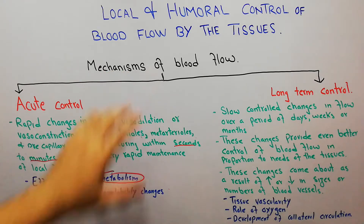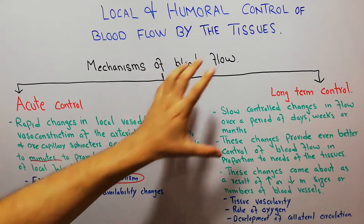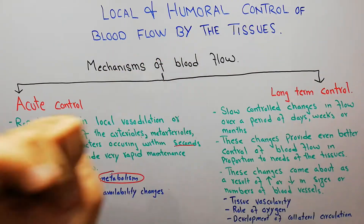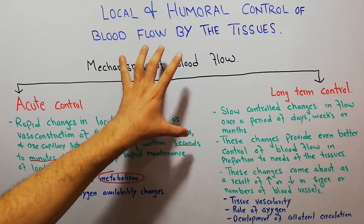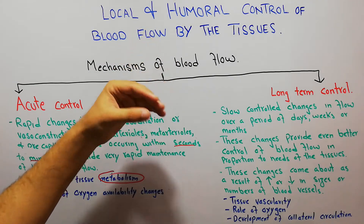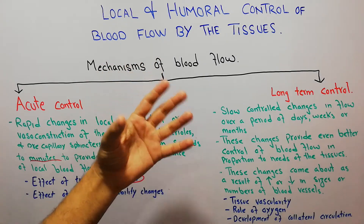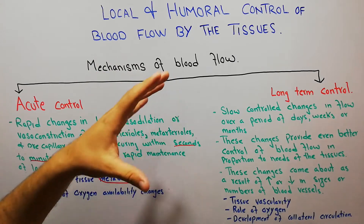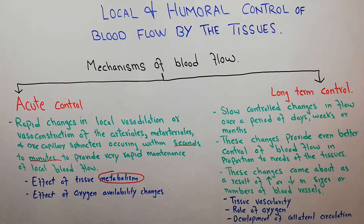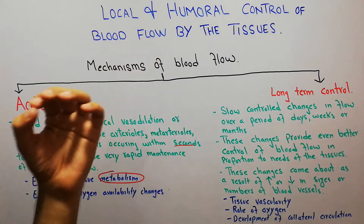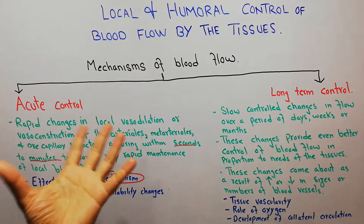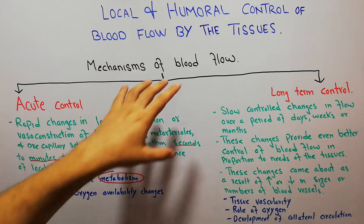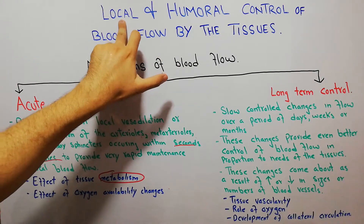Today in this lecture we are going to discuss the mechanisms used by tissues to control their blood flow — specifically the local and humoral control of blood flow. Different tissues in the human body control their own blood flow through different mechanisms. The kidneys, liver, brain, lungs, heart, skin, and muscles each have a specific blood supply and their own mechanisms to control it, even though the heart is pumping blood to every organ.